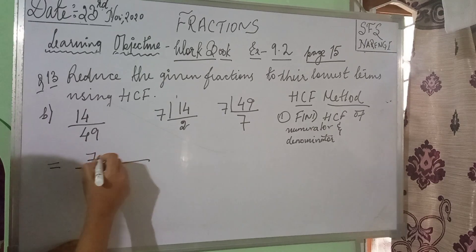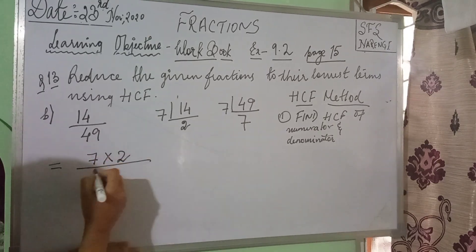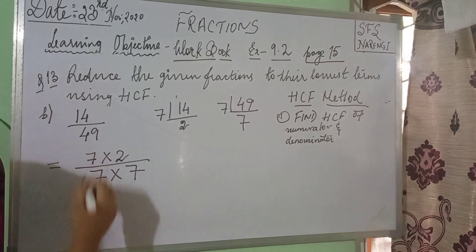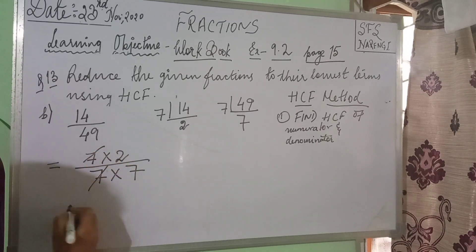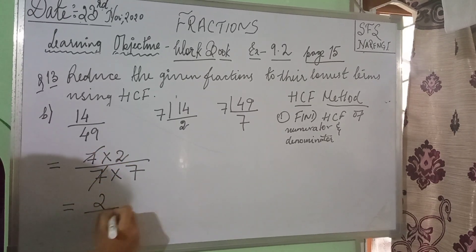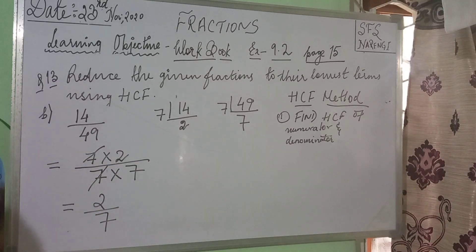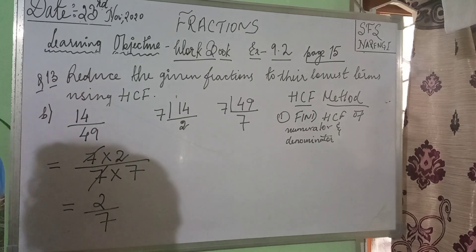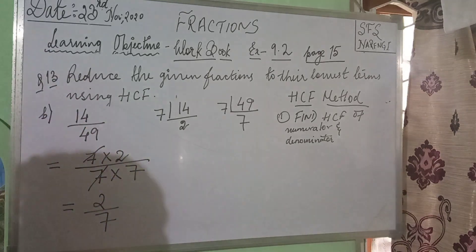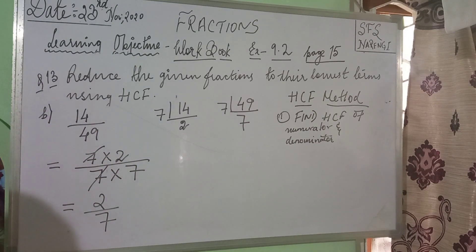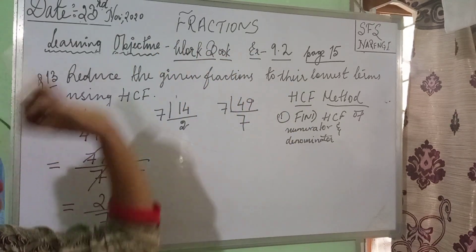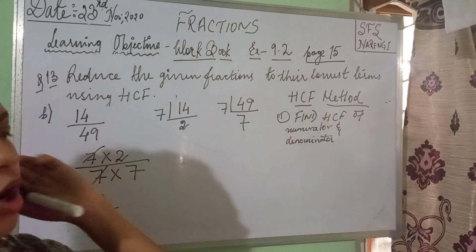Write it out: the numerator can be written as 7 into 2, and the denominator as 7 multiplied by 7. Cancel out the common terms — you are left with 2 divided by 7. That was question number 13, options A and B, on page 15 of your workbook, exercise 9.2. I hope you have noted it down in your classwork copies.